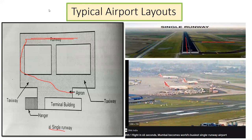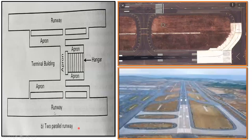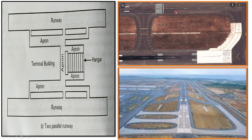The next layout we have is two parallel runways. Here we have one runway on one side and another runway on the other side — they are parallel runways. In between we have the terminal building. Adjacent to the terminal building we have one apron here, then another apron here, and another apron in another position. There is also a hangar for maintenance. The Rajiv Gandhi International Airport in Hyderabad has the two parallel runway system.